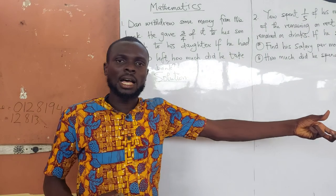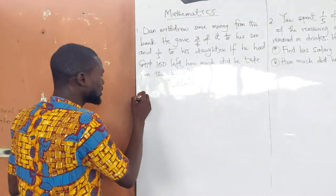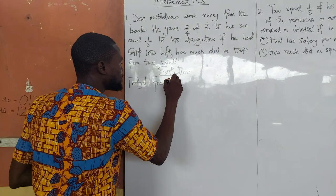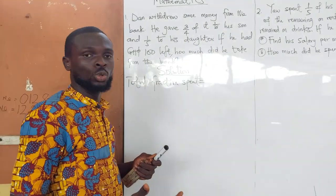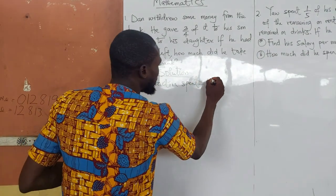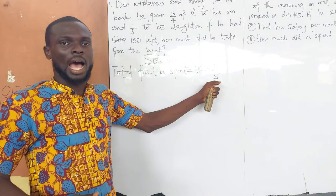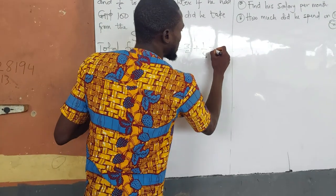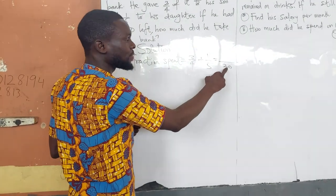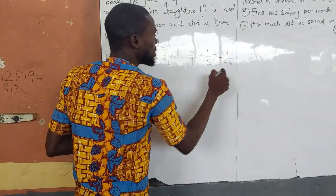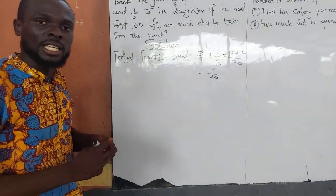He gave a quarter — three over four — to his son and one over five to his daughter. So we calculate the total fraction spent by performing the addition, finding the LCM of 4 and 5, which is 20. Four goes into 20 five times; five times three is 15. Five goes into 20 four times; four times one is 4. So we have our fraction spent as 19 over 20.